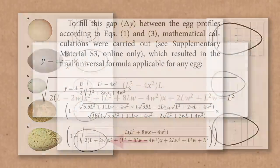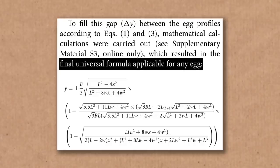Meaning the universal egg formula, well, it's this whopper. The four parameters are the egg's length, breadth, shift of a vertical axis, and the diameter at one quarter egg length.